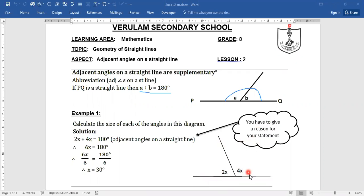Now if you look at the straight line here, we have 2x and 4x lying on the straight line. So we know that both these values, the 2x and the 4x, add up to 180 degrees. Here's your statement: 2x plus 4x is equal to 180 degrees.